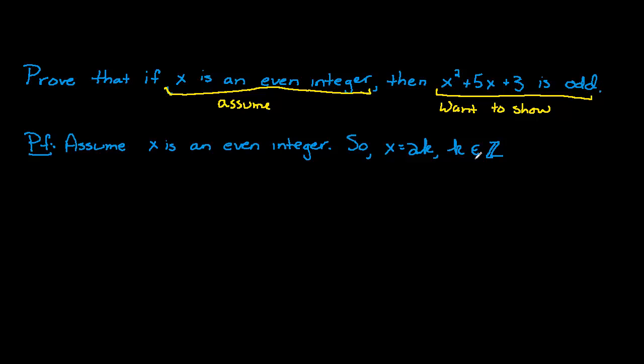Now, notice here that I'm using k is an element of the integers. This boldface Z stands for integers, and this symbol here means is an element of. So k is an integer.